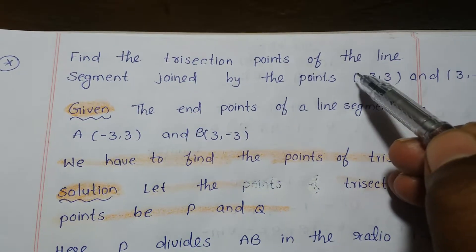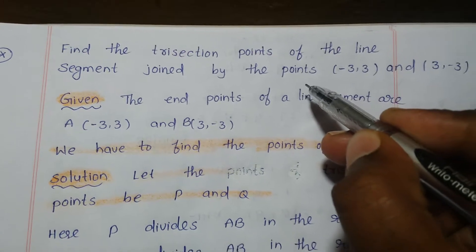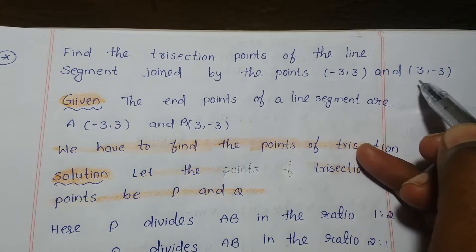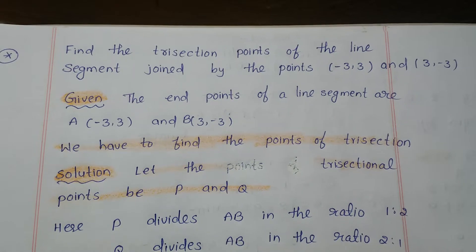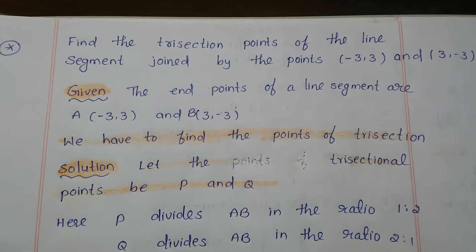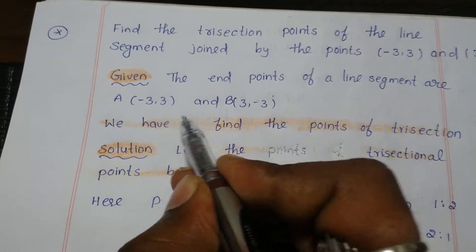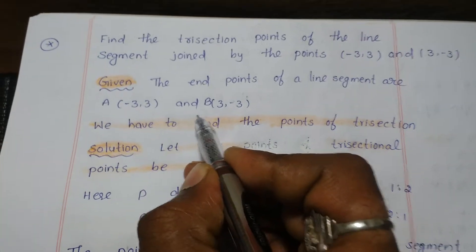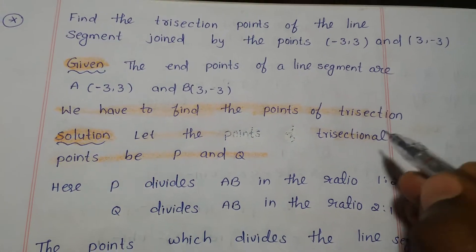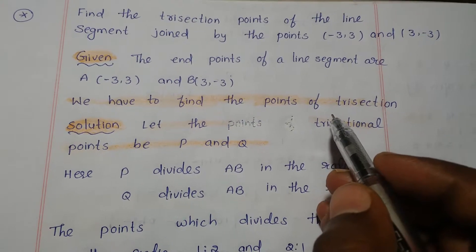Find the trisection points of the line segment joined by the given points. The endpoints of the line segment are A and B. We have to find the points of trisection.